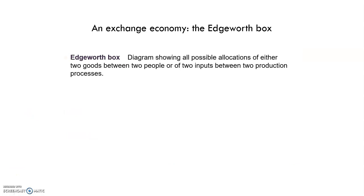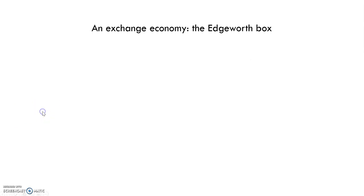The Edgeworth box is used to show this trade — how it is beneficial, which trades can occur, which trades will allocate goods efficiently among consumers, and how much better off consumers will be. We can answer all these questions for any two-person, two-good example by using a diagram called the Edgeworth box.